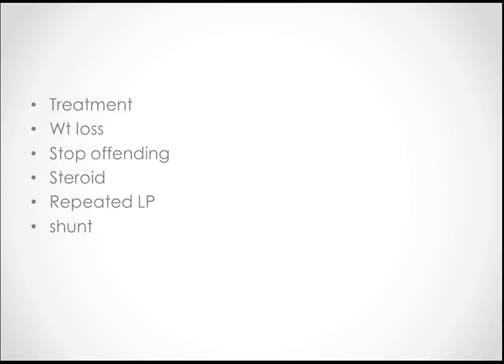For treatment: the first step is to advise the patient to lose weight. The second step is to stop any offending agents such as oral contraceptives. Steroids can be started if there is no improvement after these steps. Repeated lumbar puncture can be done to relieve symptoms. Ultimately, surgical treatment involves placing a shunt connecting the ventricles to the peritoneum.